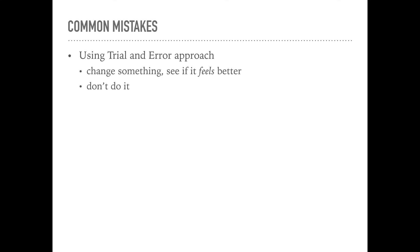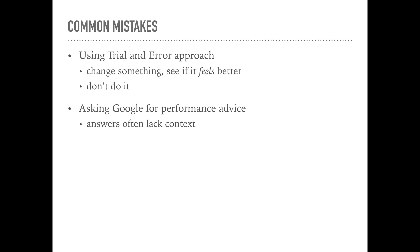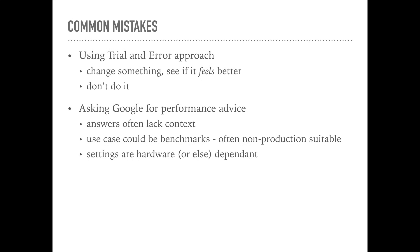Using Google for performance advice: never trust the first response you find on Google when searching for performance advice or a value for a specific variable. A lot of the advice on the internet is very generic and often lacks context. For example, you may find a lot of configuration files on the internet that were used for benchmarks. However, benchmarks often intentionally do things that should not be done on production servers, such as disabling the double-write buffer or setting InnoDB thread concurrency to zero. Also, a lot of settings are hardware-dependent, which is why it's important to understand what a specific variable is doing exactly.